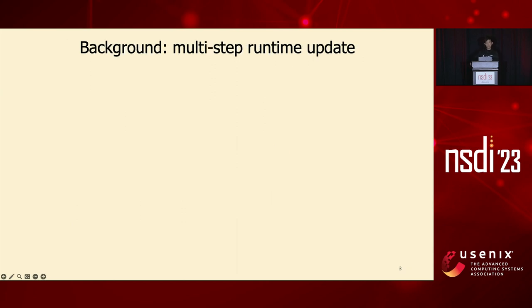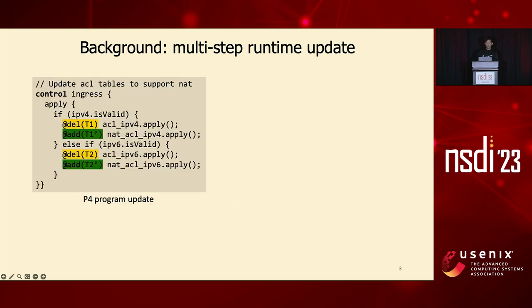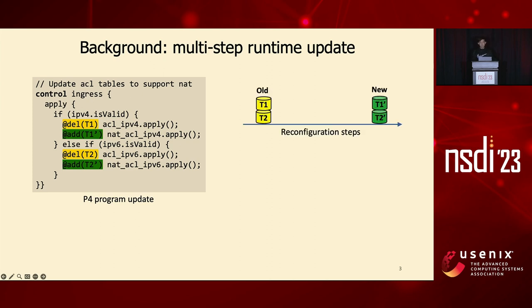This benefit of runtime programmability also comes with certain risks. Let me show this with a simple instance of a P4 update. Within this very simple code snippet, we are trying to update echo tables to support network address translation — essentially deleting the yellow tables doing echo and adding the green new tables which do NAT and echo at the same time. In the hardware, you start with the yellow old tables and end with the green new tables.